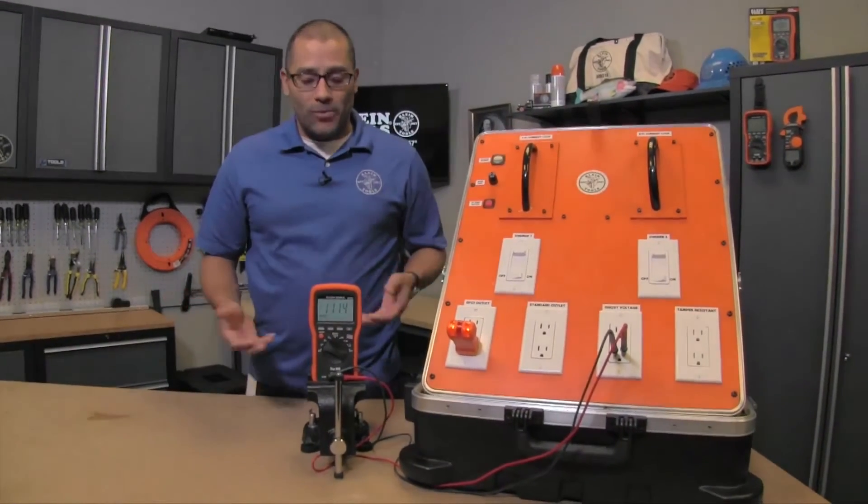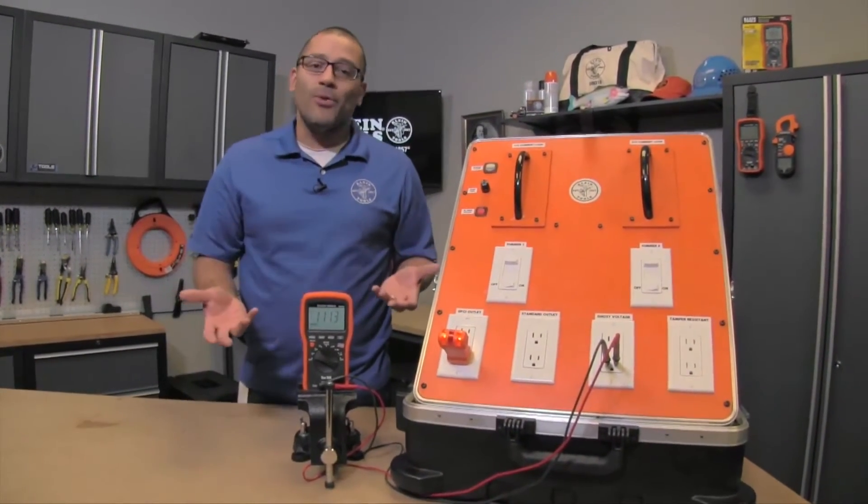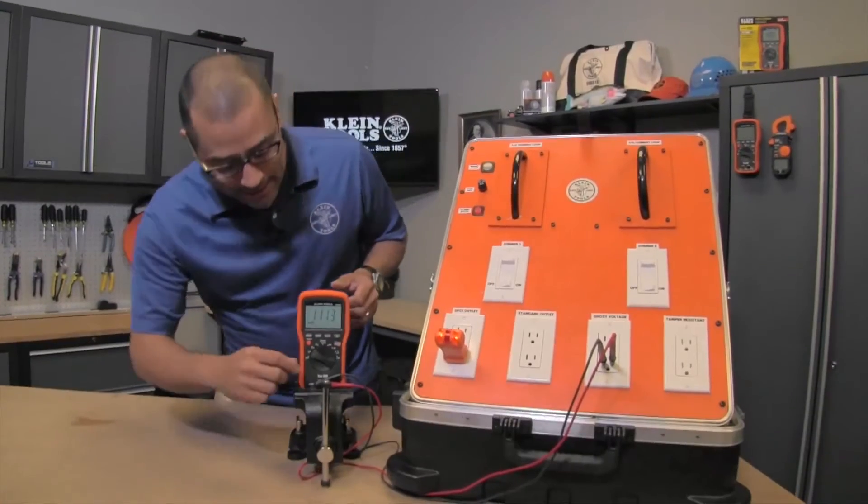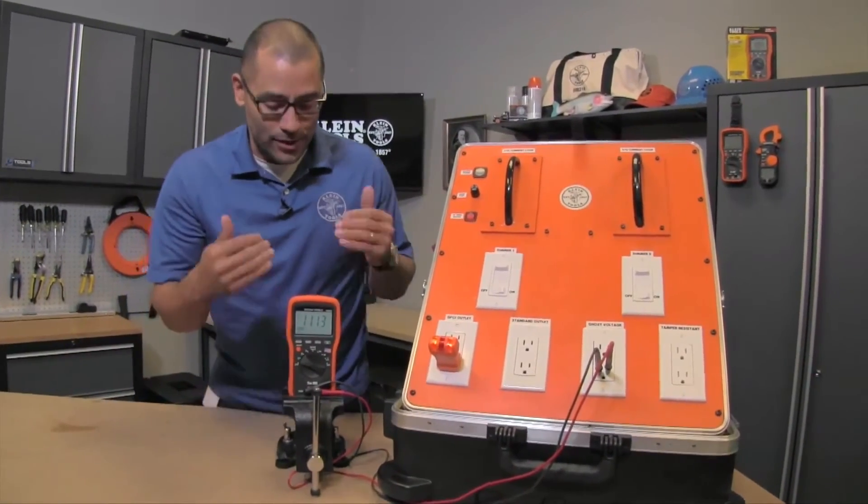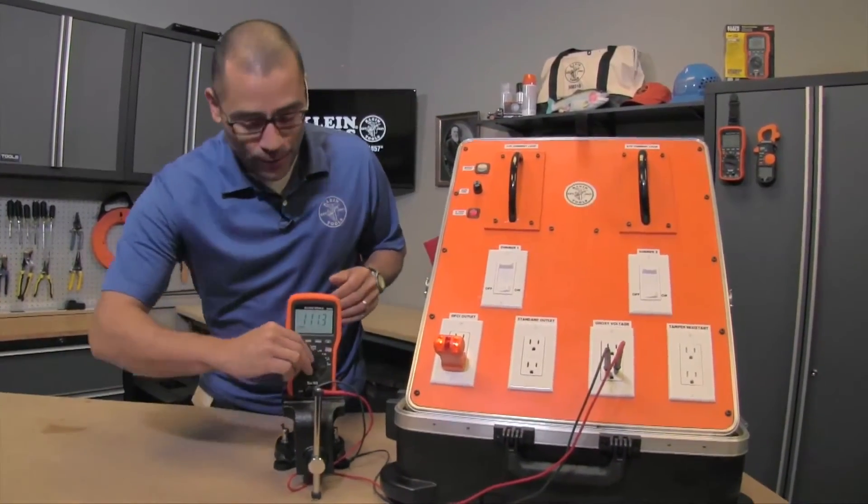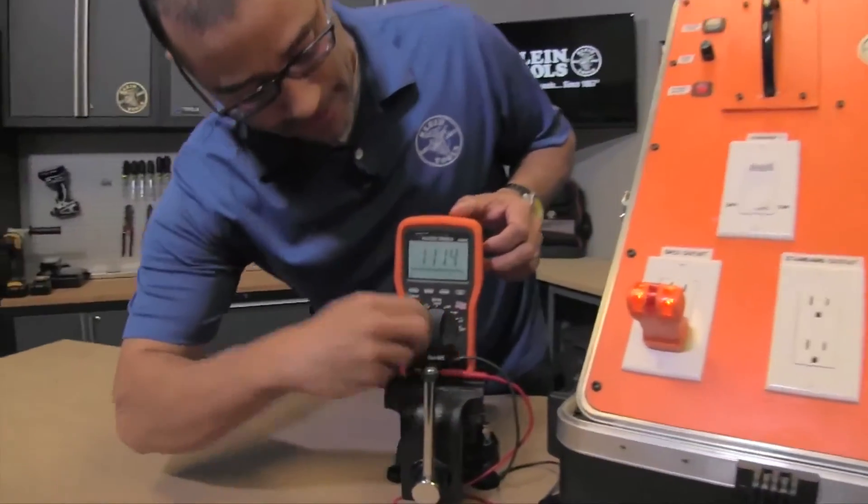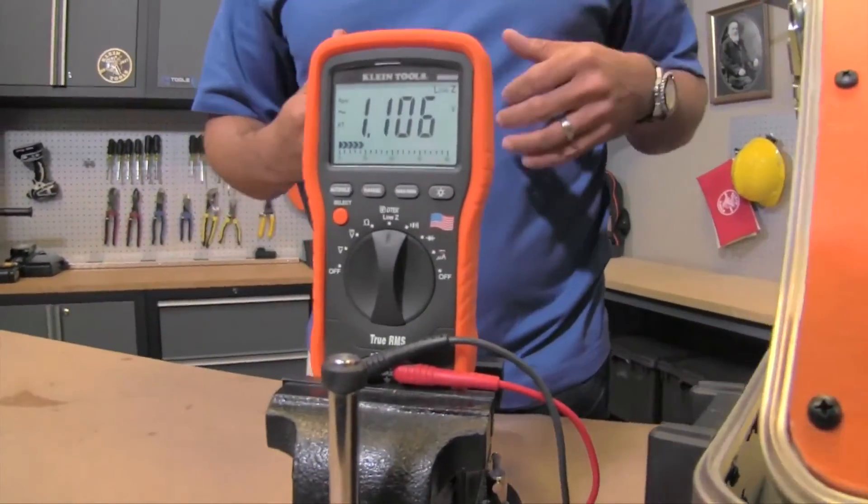So how would you troubleshoot that? Well low impedance is kind of your way to do that. What it does is it actually simulates a load. There's a thermistor inside the meter. When you flip to this feature you are actually drawing power now.